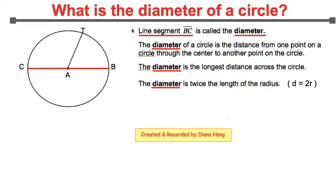The diameter also represents the longest distance across the circle. And lastly, the diameter is twice the length of the radius. We previously identified that line segment AB is a radius, same thing as line segment AC. So, the diameter CB is double the radius.